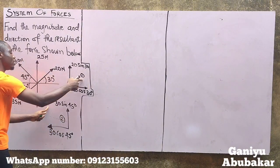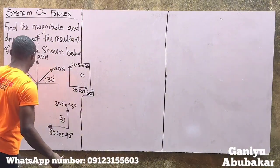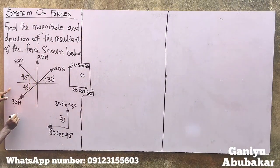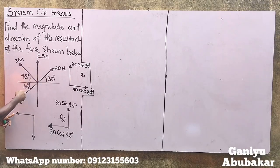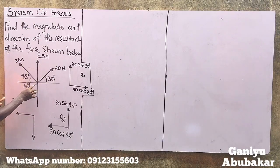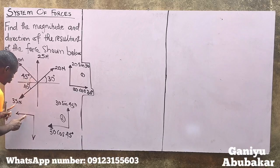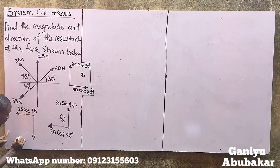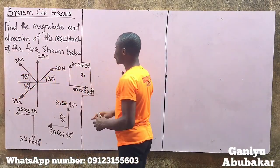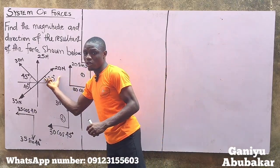Now for force three, I draw the component diagram. The force is going outward in both directions. The angle is lying on the horizontal line, so that becomes cosine. The horizontal component is 35 cos 40° and the vertical component is 35 sin 40°. I've now converted all forces into vertical and horizontal components.